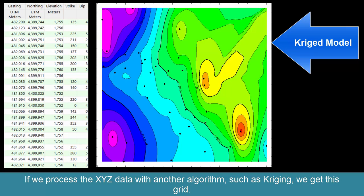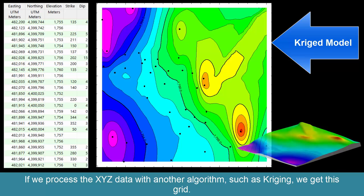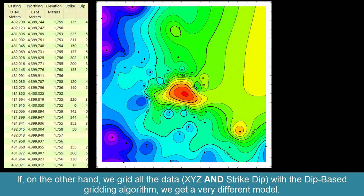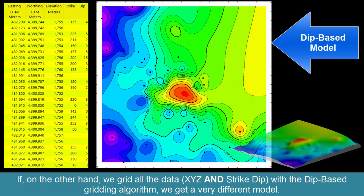If we process the XYZ data with another algorithm such as Kriging, we get this grid. If, on the other hand, we grid all the data XYZ and strike dip with the dip-based gridding algorithm, we get a very different model.